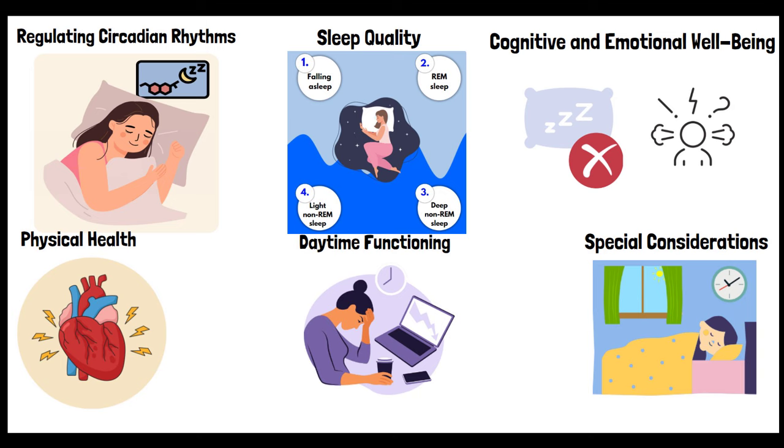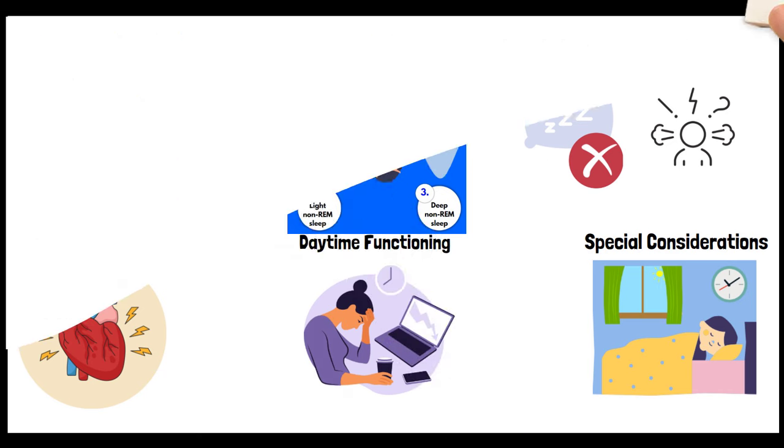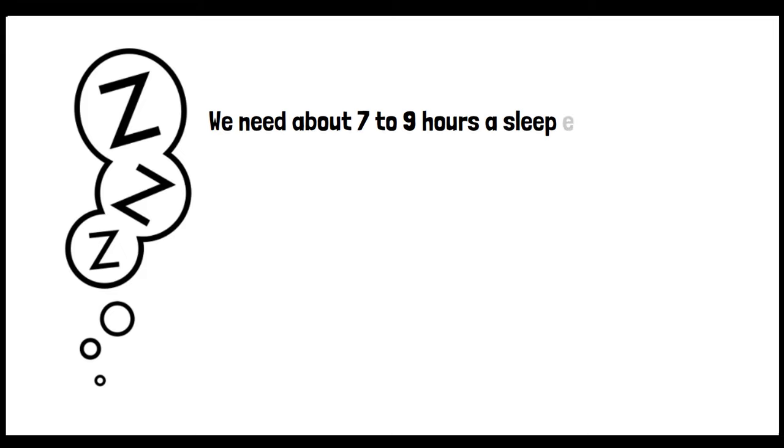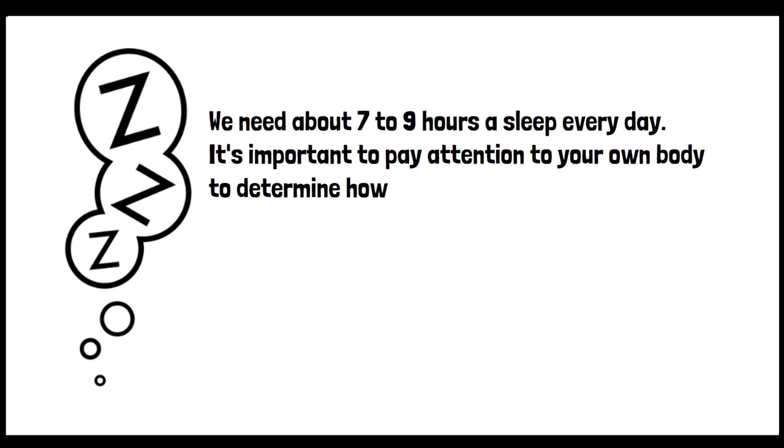While consistency is important, some flexibility is acceptable, especially if it's due to unavoidable commitments or occasional disruptions. Maintaining a consistent sleep schedule helps you tap into your body's natural rhythms, leading to better sleep and overall health. And of course, it is important to get enough sleep. We need about seven to nine hours of sleep every day. It's important to pay attention to your own body to determine how much sleep you personally need.